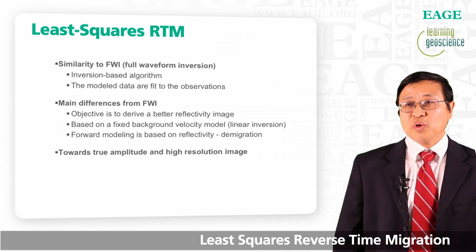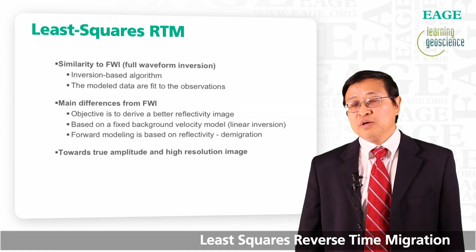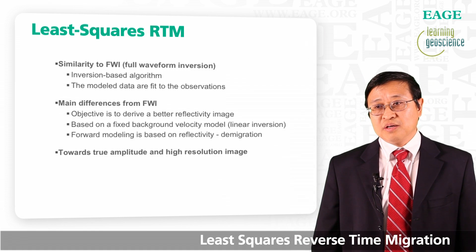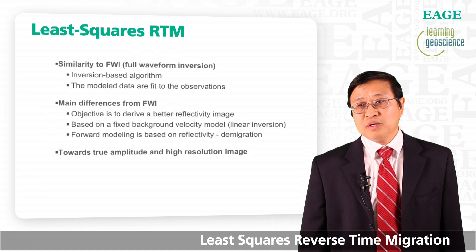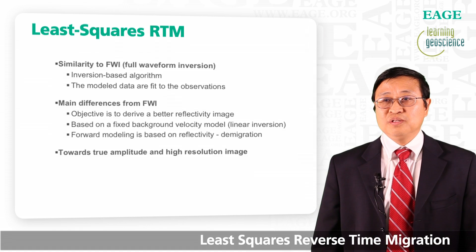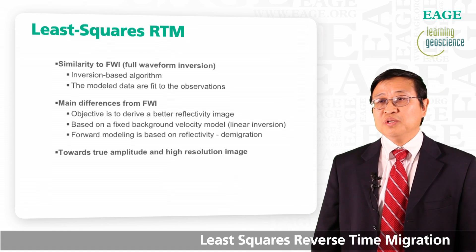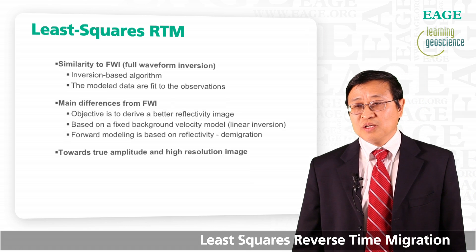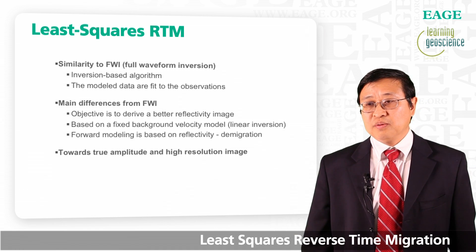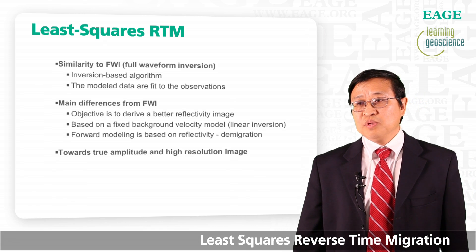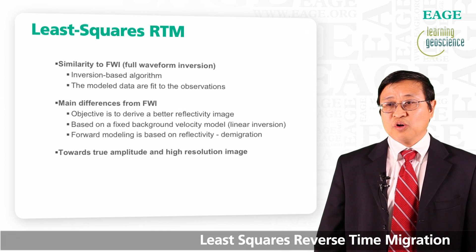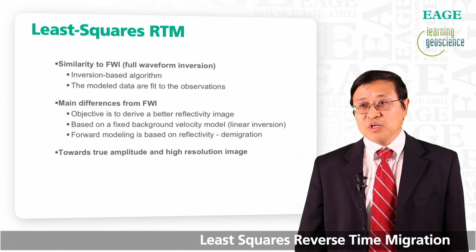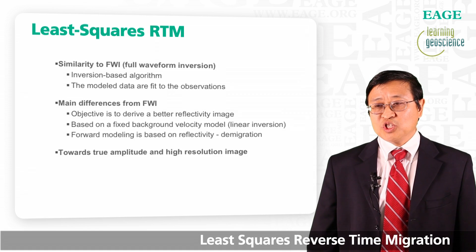There is some similarity of least squares RTM with full waveform inversion. Both are inversion-based algorithms, and both try to make modeled data fit observed data. However, there are major differences. First, the objective is different — full waveform inversion tries to get a better velocity model, but least squares RTM is not trying to update the velocity model; instead it tries to derive a better reflectivity image. Second, full waveform inversion is nonlinear inversion because each iteration you change your velocity and therefore your wave path. But in least squares RTM, you use the same velocity model during image updating, so the wave path is not changed — it is linear inversion.